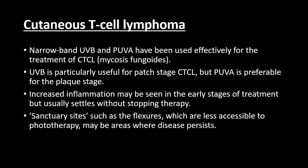The third important indication of phototherapy is cutaneous T-cell lymphoma (CTCL). Narrowband UVB and PUVA have both been effectively used. UVB is particularly effective in the patch stage, while PUVA is more effective in the plaque stage. Increased inflammation may be seen in early stages of treatment but settles without stopping therapy, so the therapy should not be stopped if the patient complains of increased erythema.